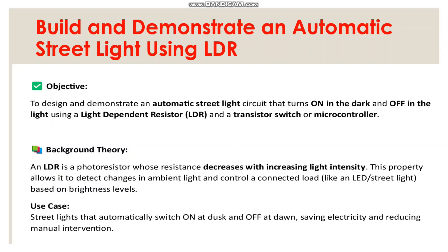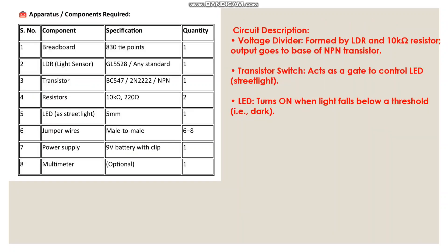Along with the transistor, the background theory is: the LDR is a photo resistor whose resistance decreases with increasing light intensity. This property allows it to detect changes in the ambient light. The use case is a street light that automatically switches on at dark and off at dawn. The apparatus list and circuit description are given.